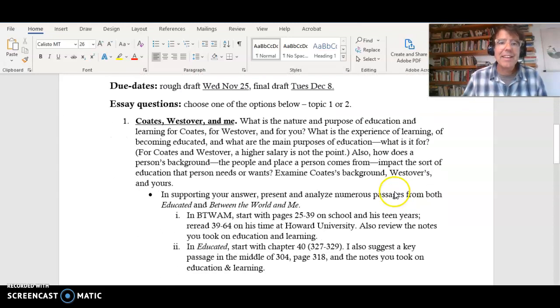So that's just a couple things from the book, from both books about our essay. And now let's look at the essay questions. So if you do topic number one, you're going to write about Coates, Westover, and yourself. So do this one if you'd like to write about your own education and your own background.